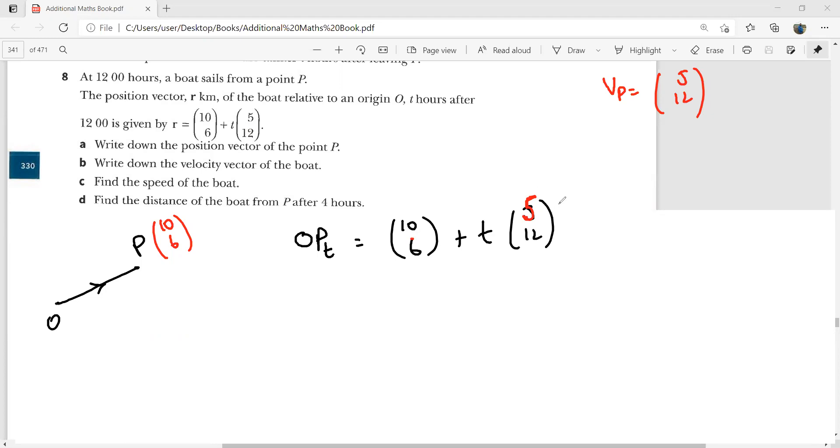Look at the first part, he says write down the position of the point P. So we got that, that was (10, 6). Then he says write the velocity vector of the boat, and we got that, that is (5, 12). Find the speed of the boat. By the way, this is one of those typical vectors. Without any working, you can determine its magnitude. What is the magnitude of (5, 12)? 13. That is 13 kilometers per hour. You better write the unit with this, 13 kilometers per hour.